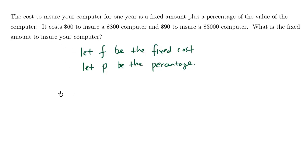Let's think about it. The cost of insurance is $60. So 60 equals 800P. The percentage of the value generates the cost of the insurance. The more expensive the item, times a certain percentage, results in more expensive insurance plus a fixed amount. That's equation number one.